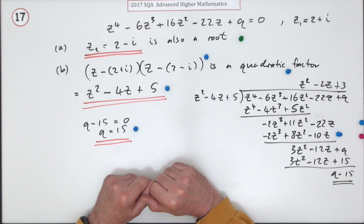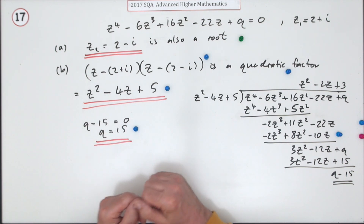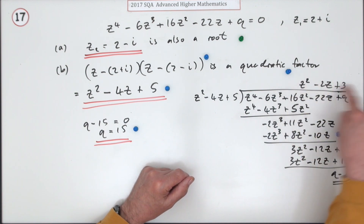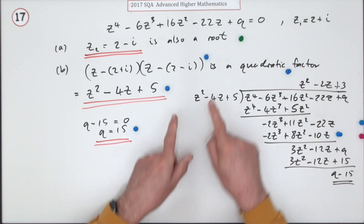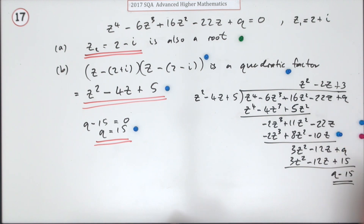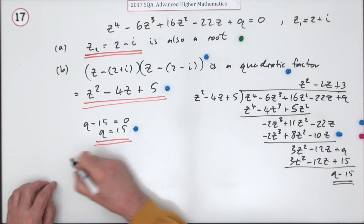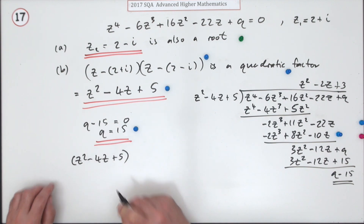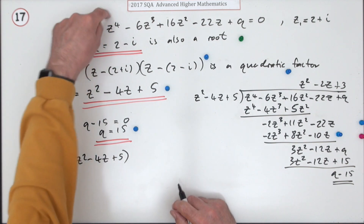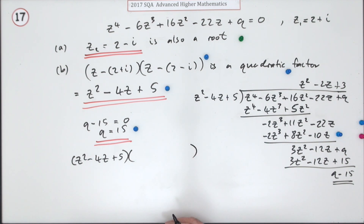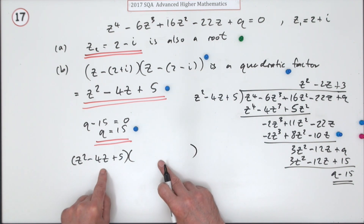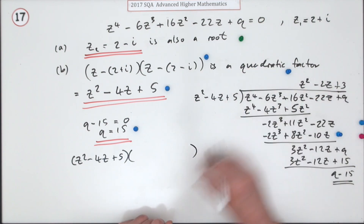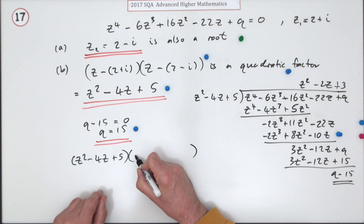Note that q is a bit of a side result — you don't actually need it to find the remaining quadratic factor, because you already have it from the division. The alternative method is to say: you know z²−4z+5 is a factor, and since the polynomial is degree four there must be another quadratic factor. This alternative is especially quick when you know the constant term at the end.